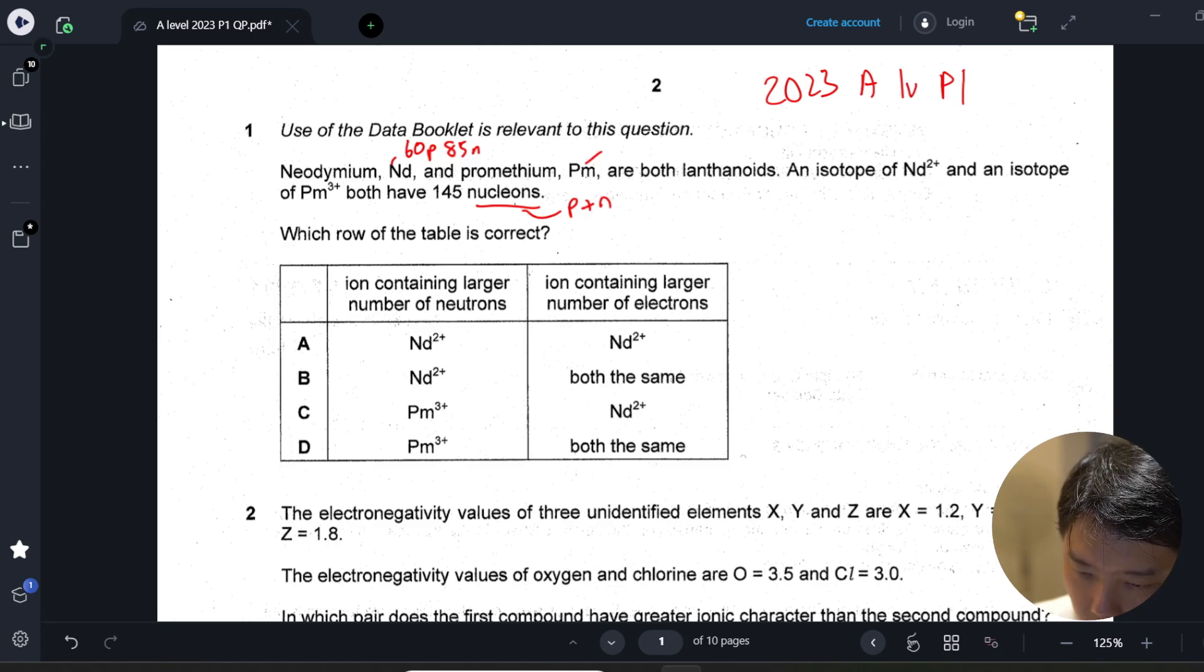Prometium has 61 protons, right beside neodymium, and it has 84 neutrons. So based on this, the larger number of neutrons should belong to neodymium.